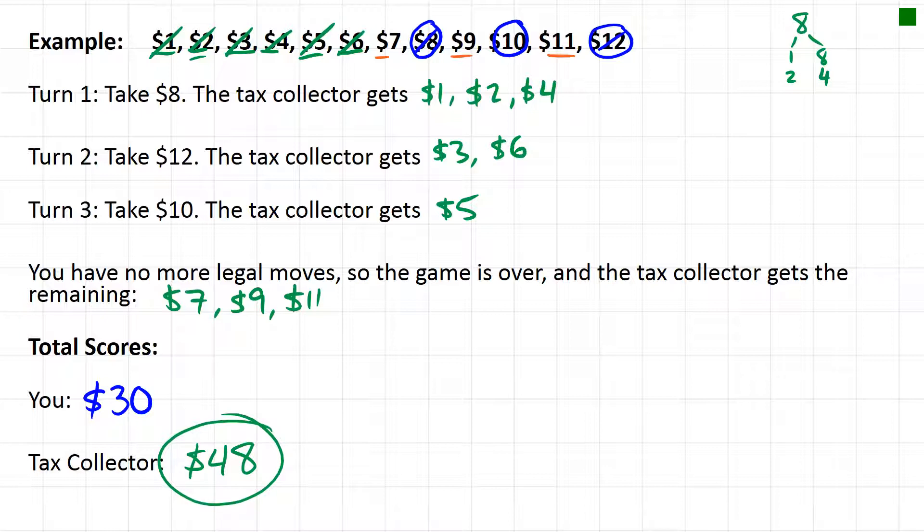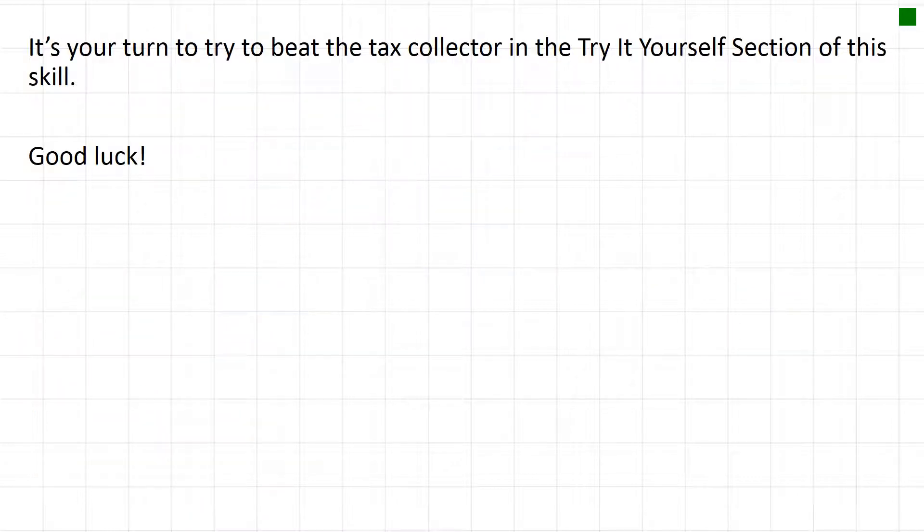So that's the game. It's pretty simple. The end game, figuring out if there's any legal moves left, that's probably the trickiest part, but you'll get that with some practice. So now it's your turn to try to beat the tax collector in the Try It Yourself section, and there are also some other questions you can ask yourself about factoring as you explore through this game.